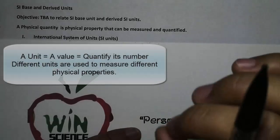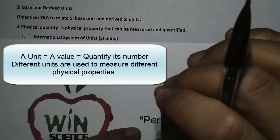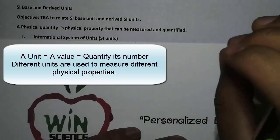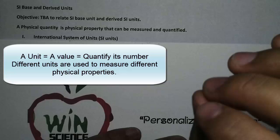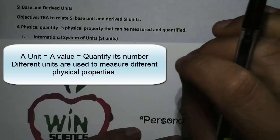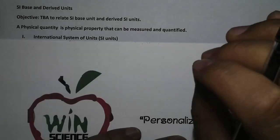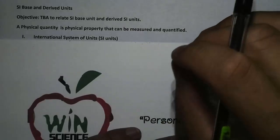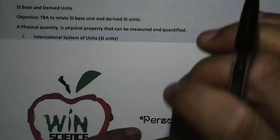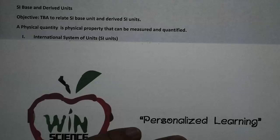In the last video, we learned about how units basically represent different values that quantify numbers in measurement. Different units are used to measure different physical quantities, which are physical properties of matter that can be quantified and measured using a measuring instrument.